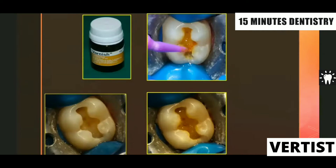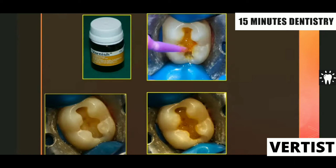Here you can see a cavity that is dried and isolated. It has a good outline form with two small areas of deeper decay and nicely prepared dovetails. We take the varnish with an applicator tip, dip it, and apply it on the floor of the cavity — a bit will also go on the walls. After applying, wait about two minutes for it to dry, then apply another coat. One coat is not enough because porosities remain — just like applying nail polish, a second coat is necessary.